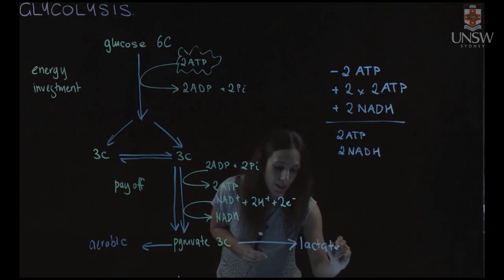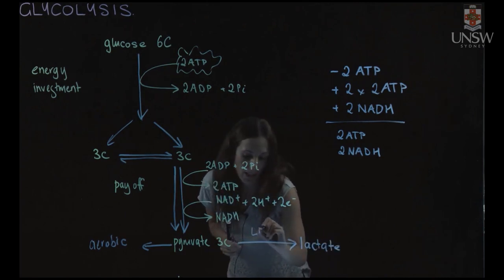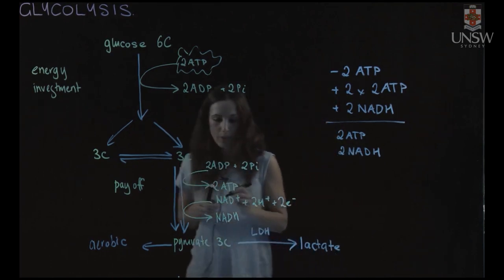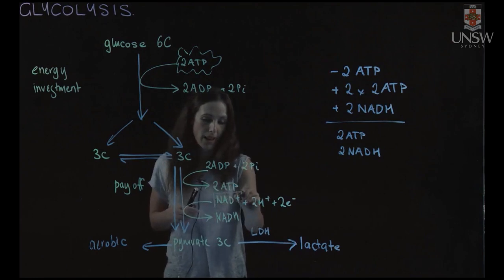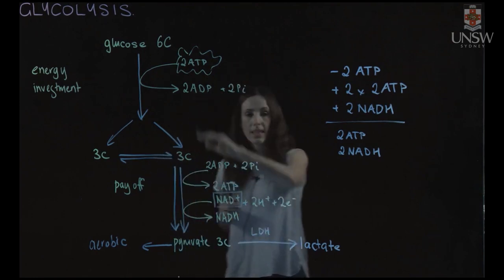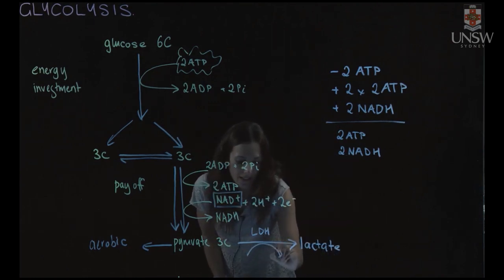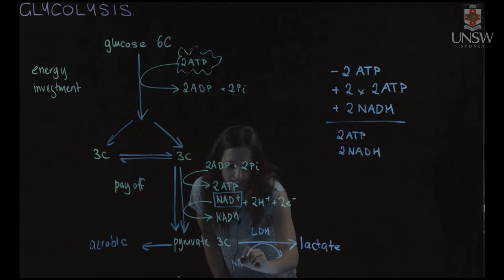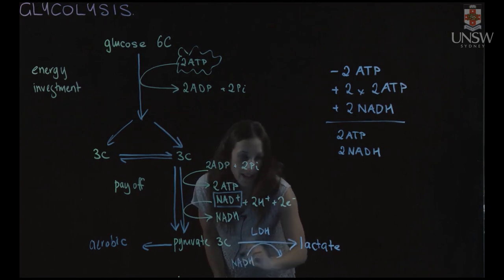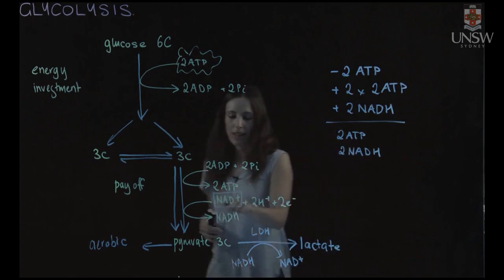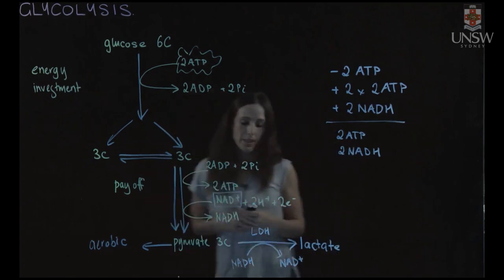Now this reaction is performed by an enzyme called lactate dehydrogenase. The purpose of this reaction is to provide us with NAD plus, which is needed to keep glycolysis going. So in this reaction here, our NADH is re-oxidized to give us our NAD plus. And that NAD plus can then be used in glycolysis to be reduced to NADH.